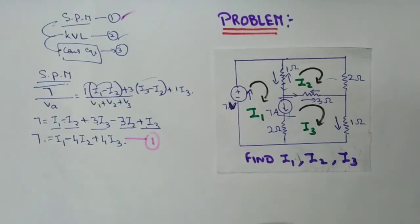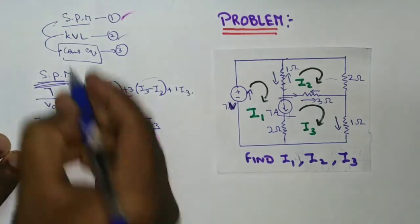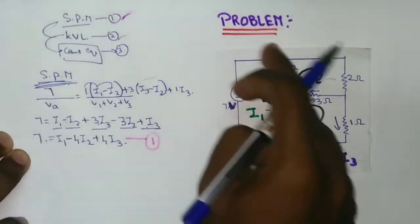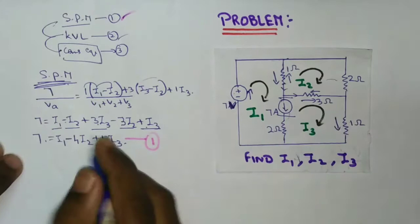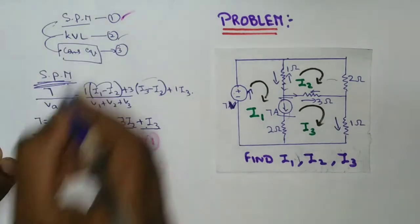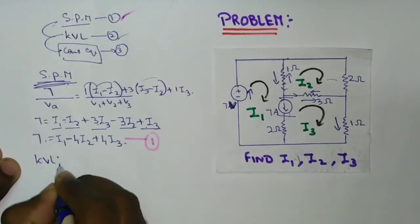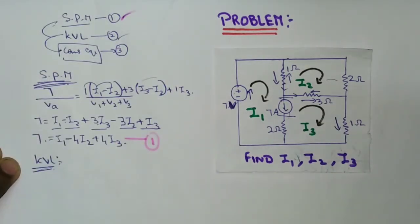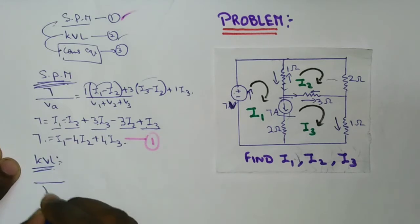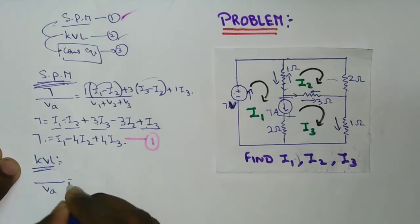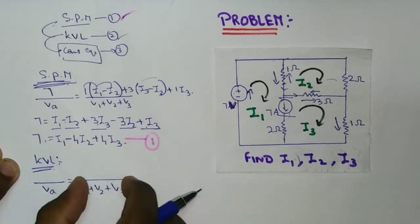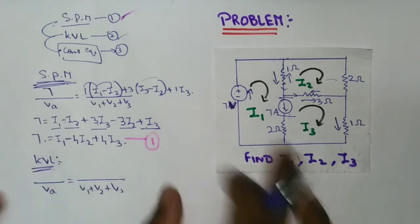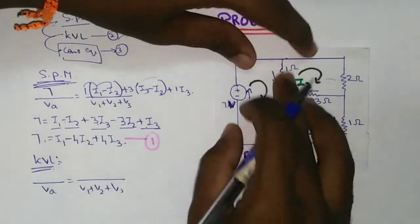We have to finish this. We have a balance I2 loop — that is KVL apply. Let's start: we have to finish V1, V2, V3 — that is the concept. We have to finish 1 ohm.